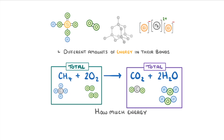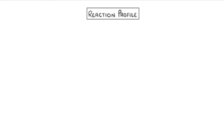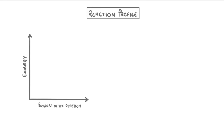In this particular case, the products would have less energy than the reactants, and we can show this on a reaction profile, where the y-axis is the total energy of the molecules and the x-axis is the progress of the reaction. So on the left we place our reactants, and on the right we put our products — but importantly for this reaction, we'd have to put the products lower down, because they have less energy.